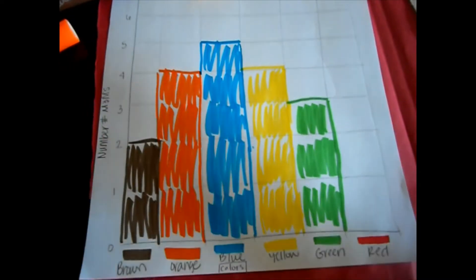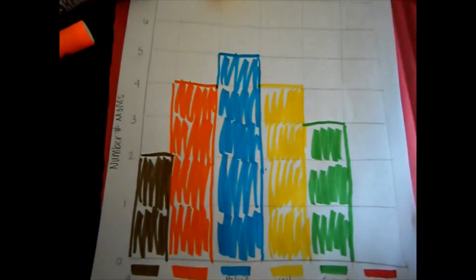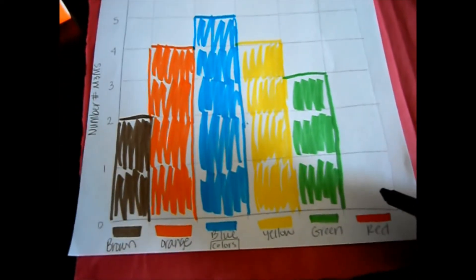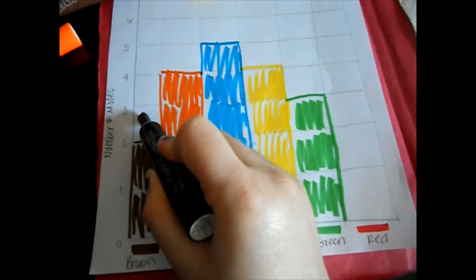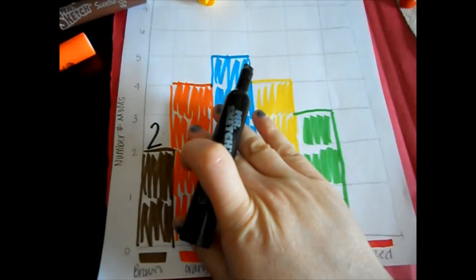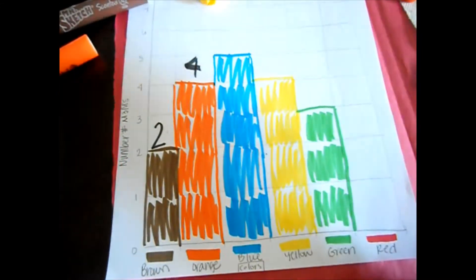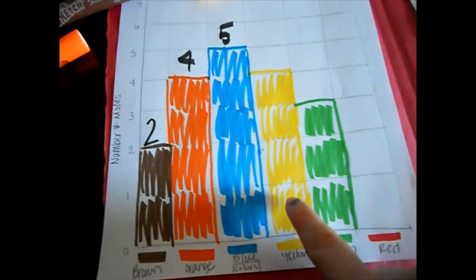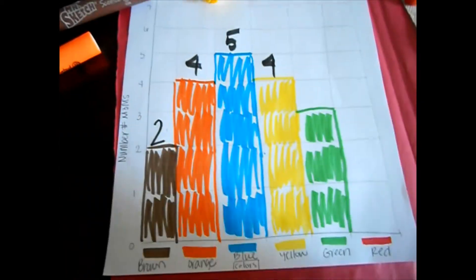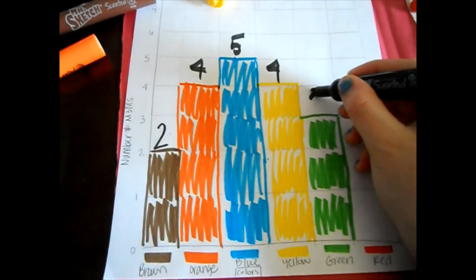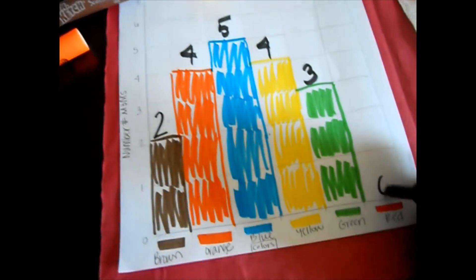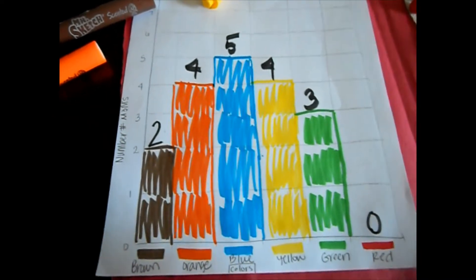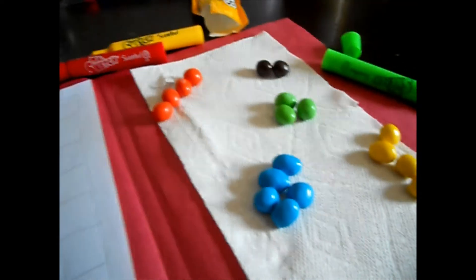If you want to help your child or practice with their numbers, you can actually have them write the number at the top. So brown. 1, 2. This one has 2. 1, 2, 3, 4. And this one has 4. 1, 2, 3, 4, 5. 5. 1, 2, 3, 4. 4. 1, 2, 3. And this is zero. And then I can actually say 4 and 4 are the same number. So those two are the same.